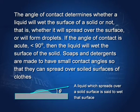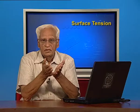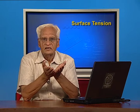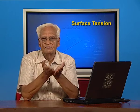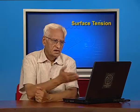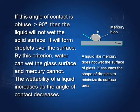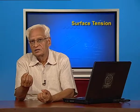Soaps and detergents are made to have small contact angles so that they can spread over soiled surfaces of clothes. If the angle of contact is less than 90 degrees, the liquid will wet. In the case of mercury, it is more than 90 degrees, and therefore mercury will not wet. So what happens to mercury? If it falls on a glass plate, it will break up into small spherical drops.